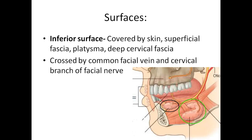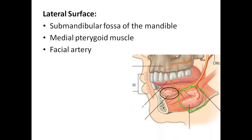Coming to the surfaces and their relations: the inferior surface faces downwards and is covered by skin, superficial fascia, the investing layer of deep cervical fascia, and the subcutaneous muscle called platysma. It is also related to the common facial vein and the cervical branch of the facial nerve, which supplies the platysma.